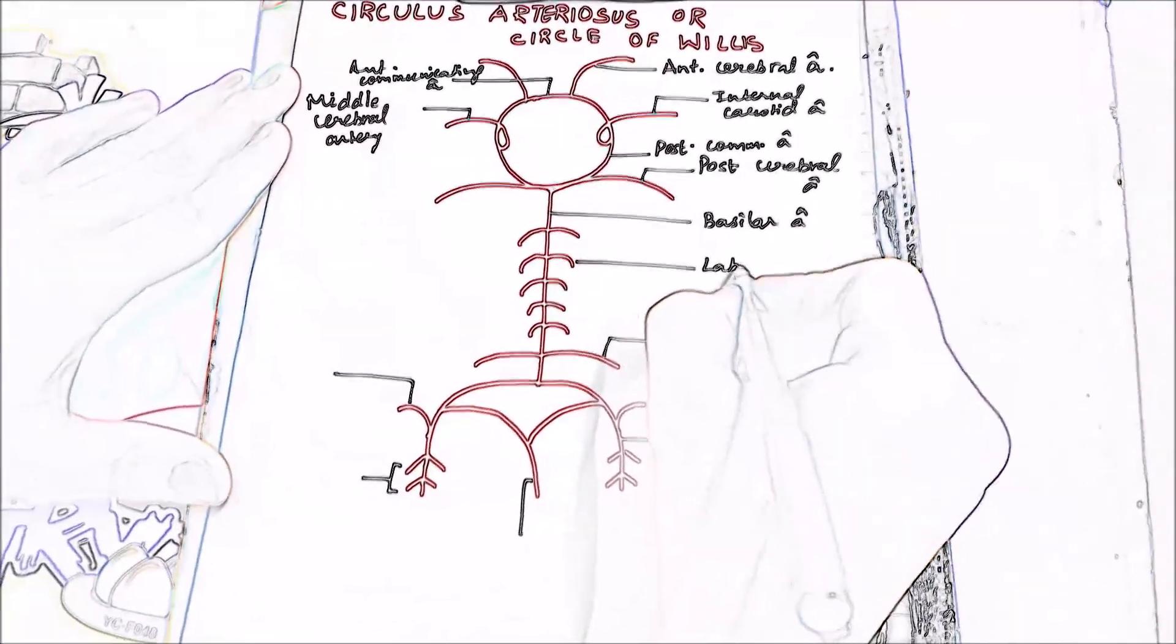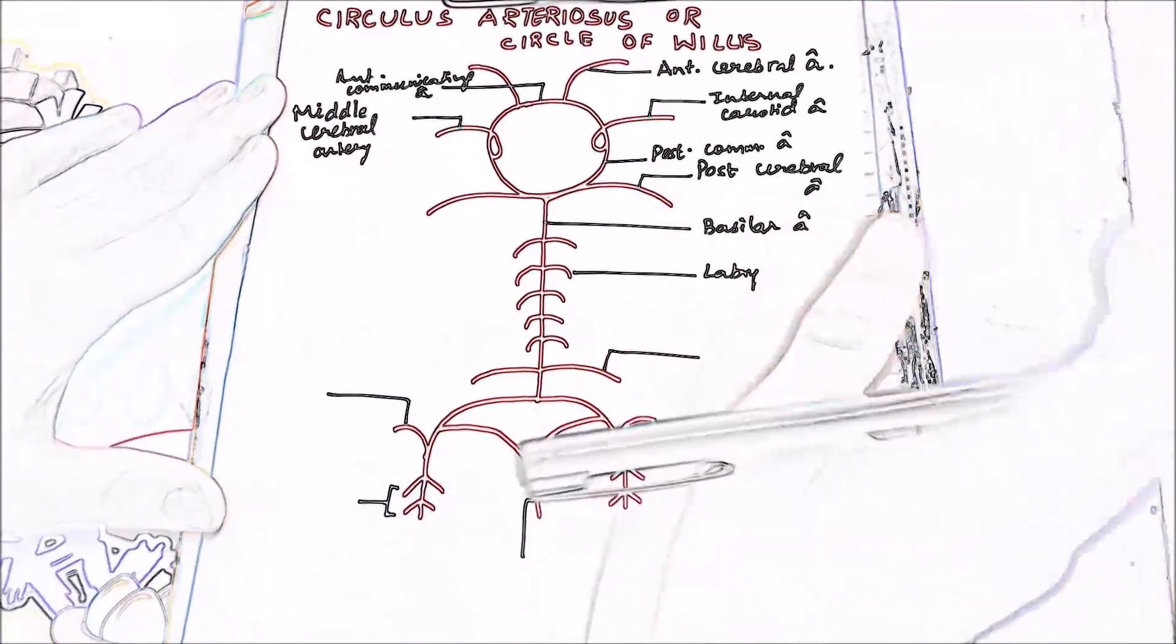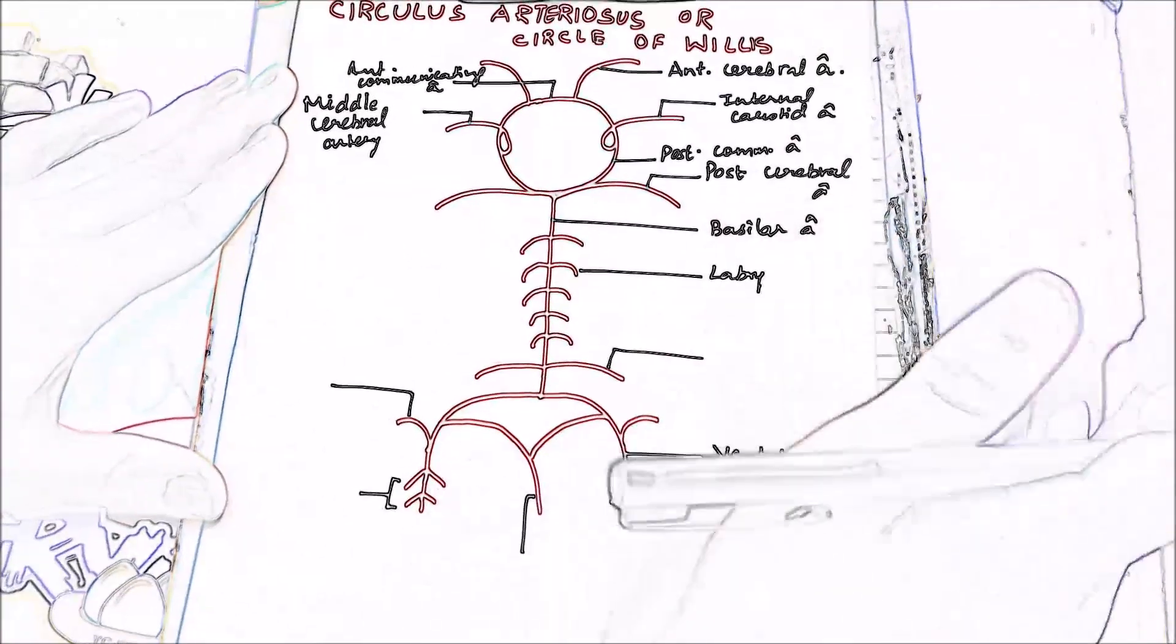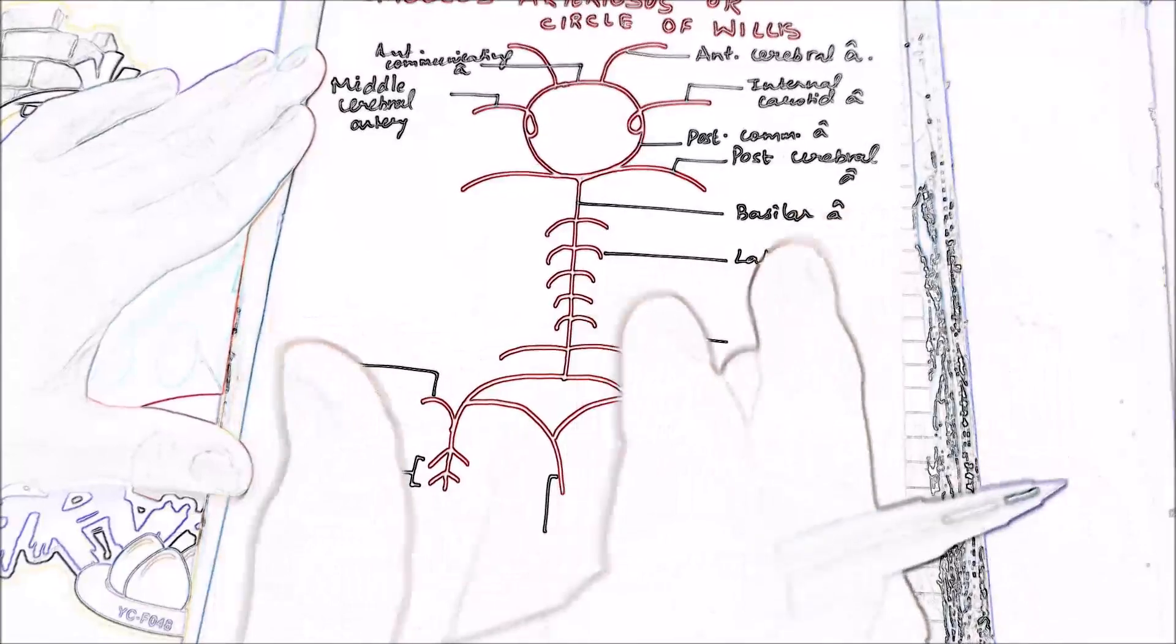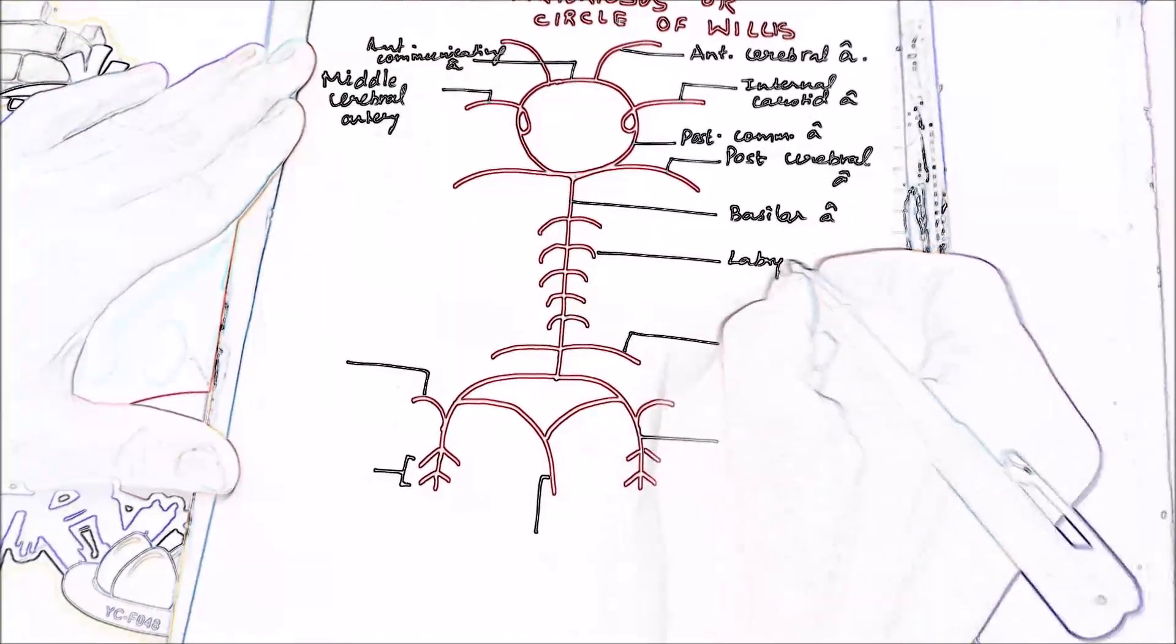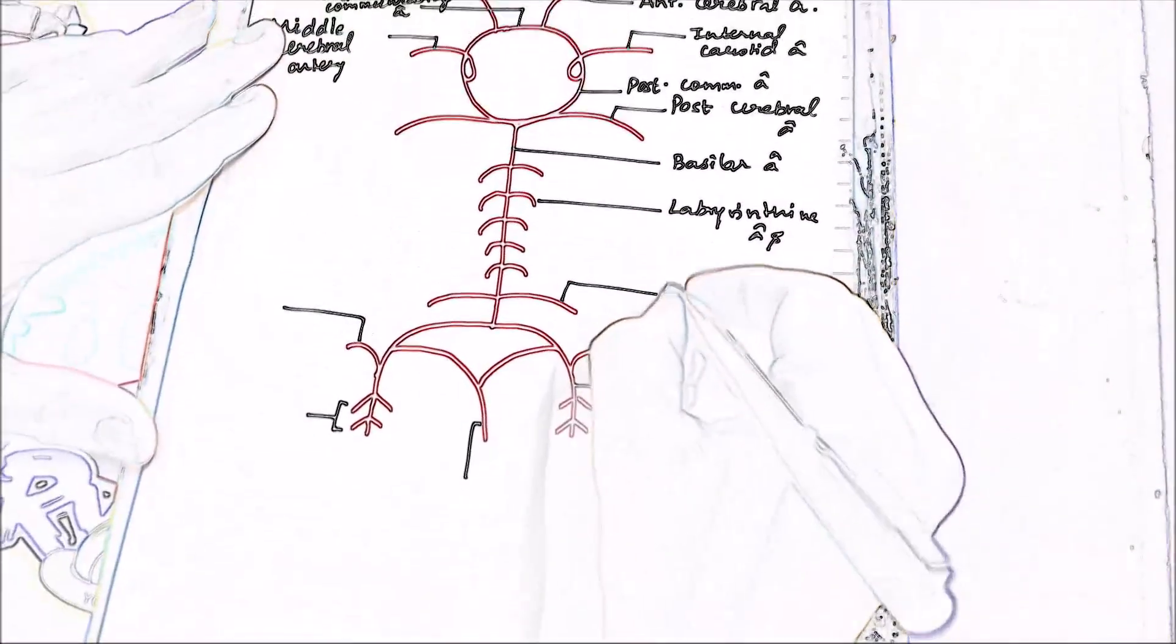These are called the labyrinthine arteries because they provide arterial supply to your middle ear and your labyrinth, which maintains balance in the ear.